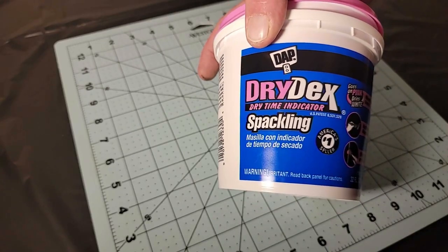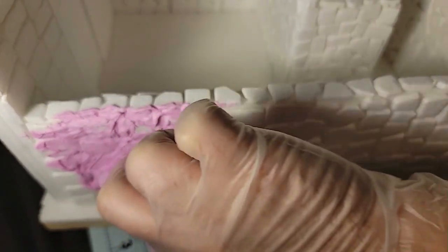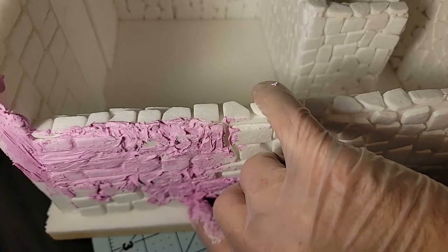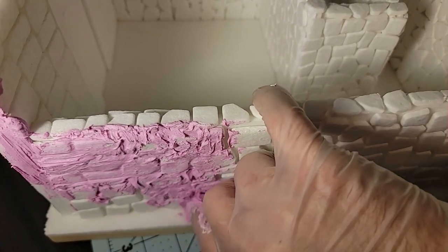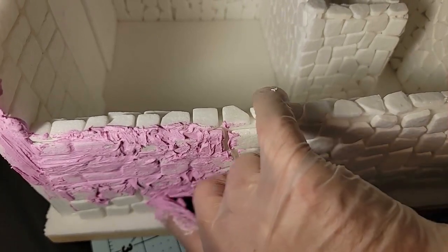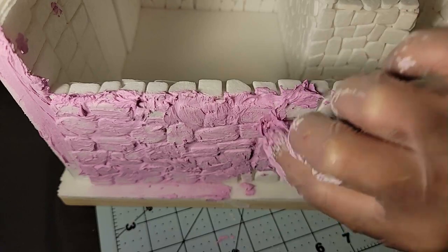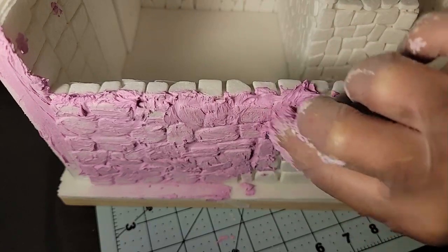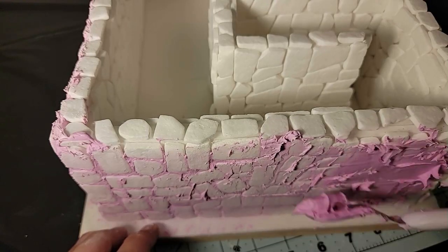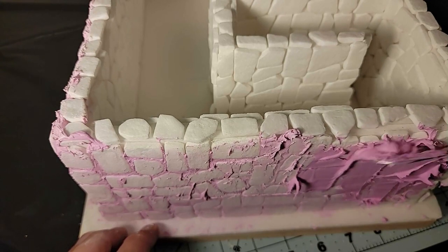Now that all of the stones were on the walls, I needed to fill in the gaps, so I decided to use some spackle. This particular kind starts pink and dries white, so that would be helpful to see where I need to add more. I started off using my fingers to add the spackle, but I eventually realized I had a smoothing tool that would work better and make less of a mess, so I switched to using that.